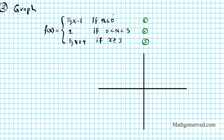If you notice, the first one has a zero right here. That tells you the first partition is on zero — that's the jump from the first function to the second function. It stops at zero and the second one continues from zero. The second partition or break happens at three. Function number two stops at three and function three continues from three.